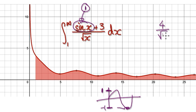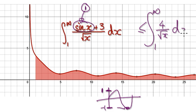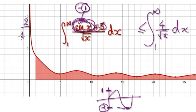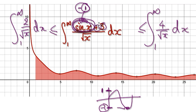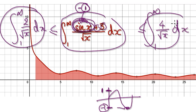And then you've got your square root here. So this thing here must be less than or equal to this thing here. If you look at this, the lowest value that this thing here could be is negative 1, so negative 1 plus 3 would be 2. So you get 2 over square root of x, from 1 to infinity dx.